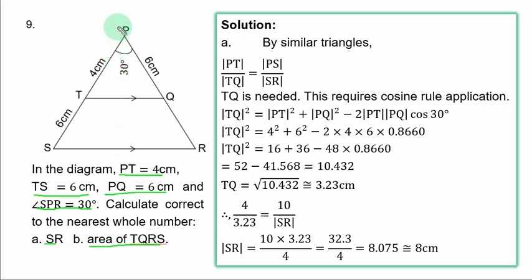For triangle PTQ, using the cosine rule since we have two sides and the included angle: TQ² = PT² + PQ² - 2 × PT × PQ × cos 30°. So TQ² = 4² + 6² - 2 × 4 × 6 × cos 30° = 16 + 36 - 48 × 0.866 = 52 - 41.568 = 10.432. TQ = √10.432 ≈ 3.23 cm.